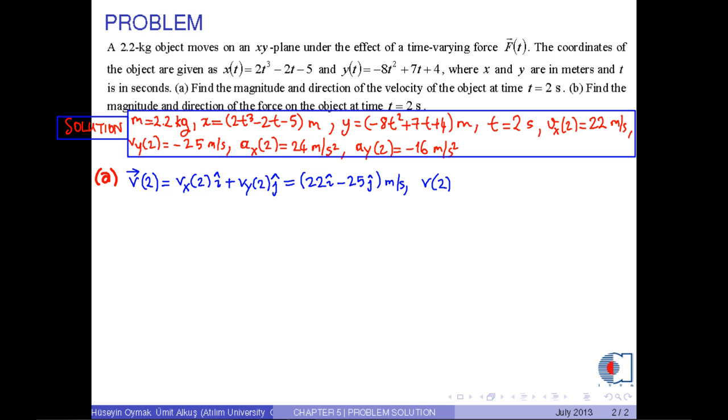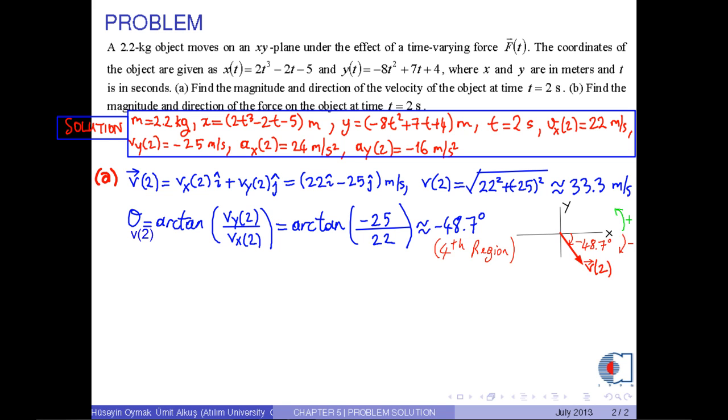And its magnitude is found by this formula. So we get approximately 33.3 meters per second. And the direction is found by the angle θv(2) = arctan(-25/22), which gives approximately -48.7 degrees. According to the configuration, it is in the fourth region.